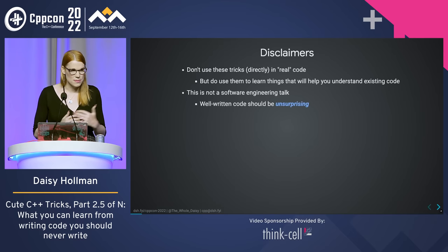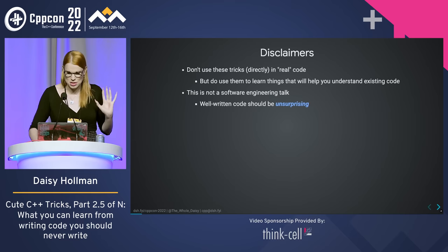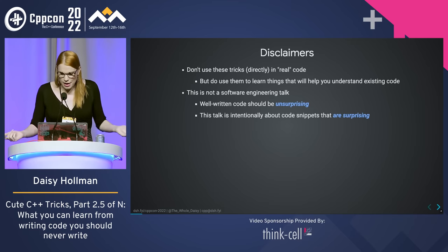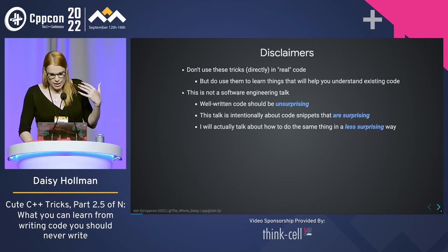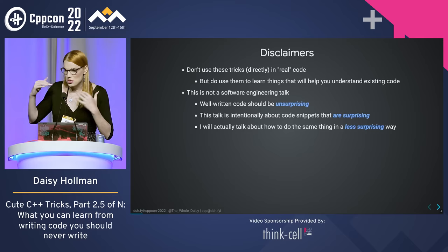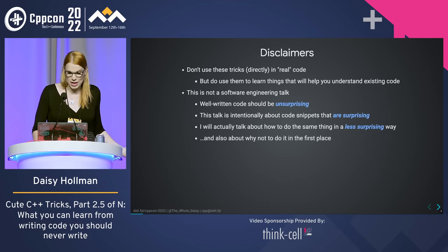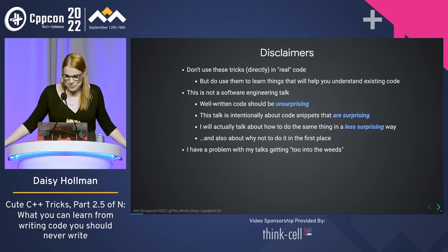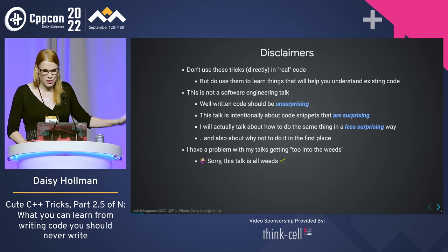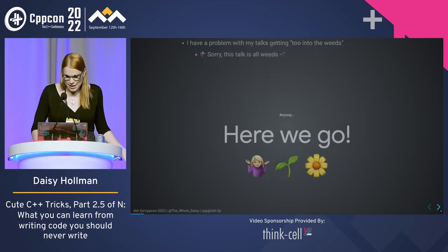This is not a software engineering talk specifically. Well-written code should be unsurprising — this is kind of the anti-software engineering talk, because this is a talk about code that is surprising. I will talk about how to do the same thing in a less surprising way, and less surprising should generally mean better when you're writing real code. I'll also talk about why not to do it in the first place. This talk is all weeds — I decided to start leaning into it.